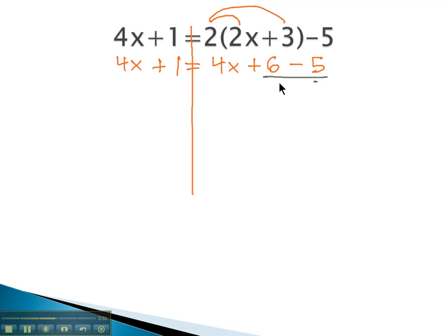After distributing, we check to see if we can combine like terms. On the right side, we see we have 6, minus 5. The equation now reads, 4x plus 1 equals 4x plus 6, minus 5 is 1.